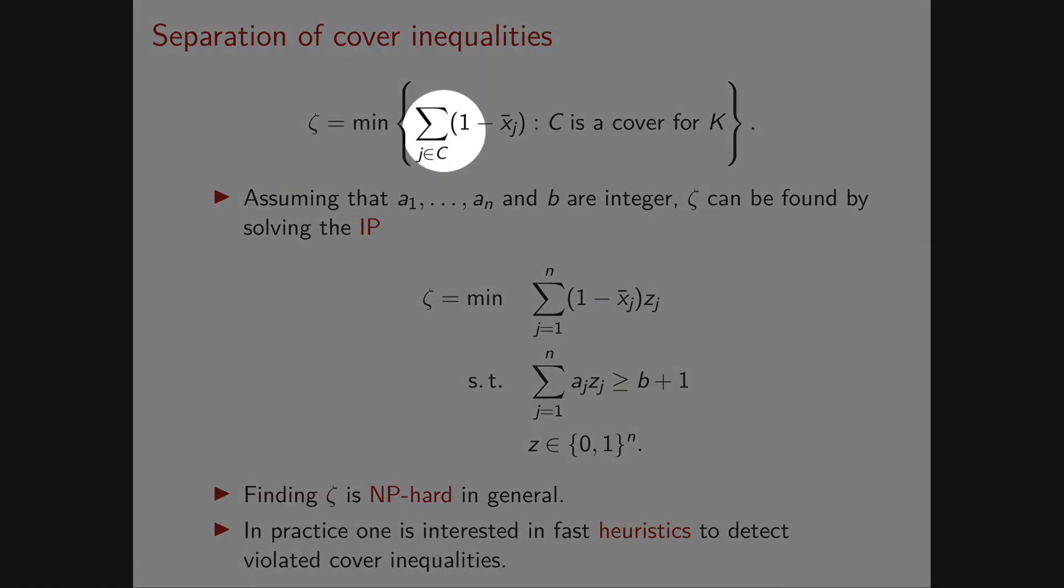Now the objective function is supposed to represent this function. It's now the sum over all j of (1 - x̄ⱼ) times zⱼ.